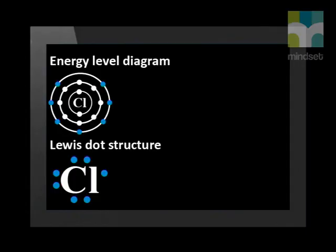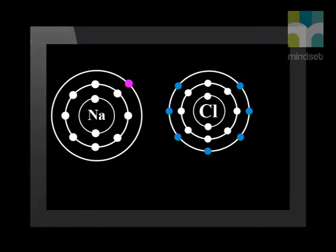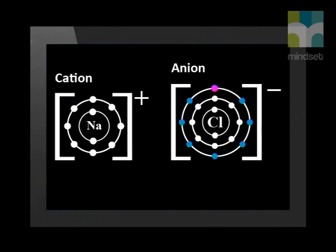Cl is the symbol for chlorine. The Lewis dot diagram for the neutral chlorine element has seven valence electrons, shown in blue. Sodium loses an electron and becomes a cation, a positive ion. Chlorine gains an electron and forms an anion, a negative ion. Sodium has one less electron than protons, so it has formed a positive cation. Chlorine has one more electron than protons, so it has formed a negative ion called an anion.